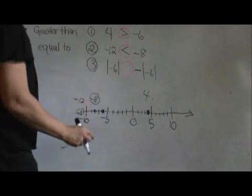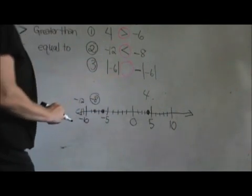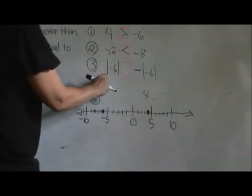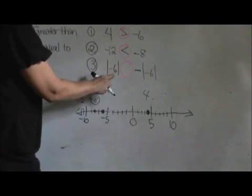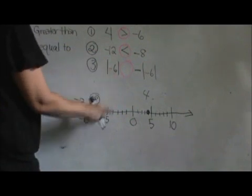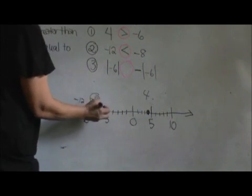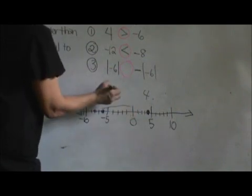Now let's look at the absolute value. When you take absolute values, you are always going to take the positive because the definition of absolute value is the distance from zero. So negative 6 is actually 6 units away from zero.